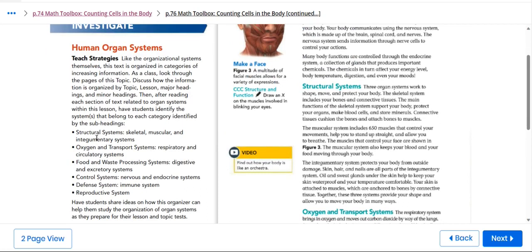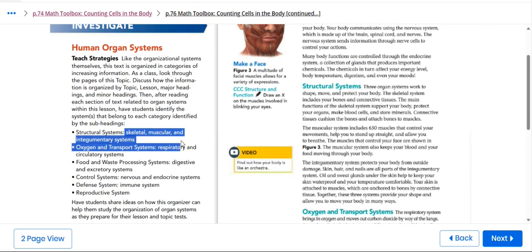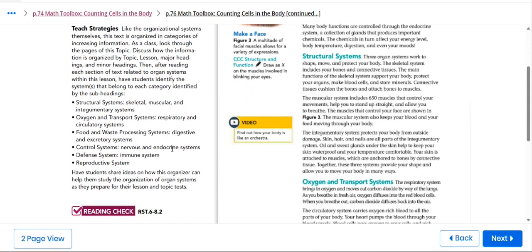Here we have the structural systems which are the skeletal, muscular and integumentary system. We have oxygen and transport systems, respiratory and circulatory systems. We also have food and waste processing systems, digestive and excretory system, control system, nervous and endocrine system. We also have the defense system which is the immune system and lastly the reproductive system.